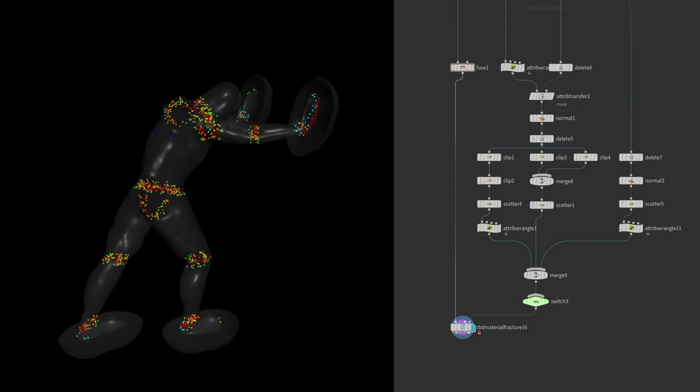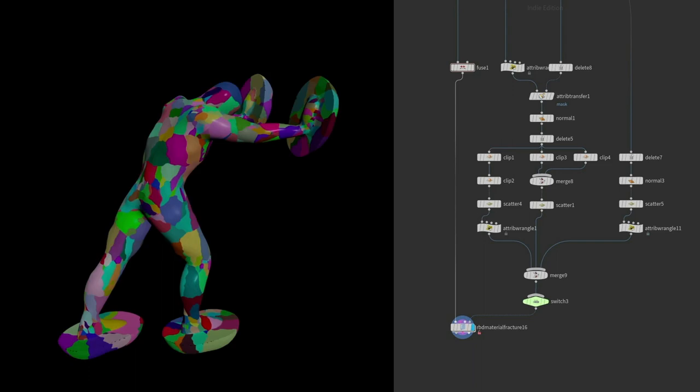For the fracturing itself, we utilized impact points. It's super simple and straightforward. It gives you the control to decide where will be more fractures on the character. Here we know it's a humanoid and it will have joints that will be bending. We needed more definition in those areas to get this to work properly.